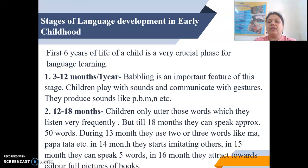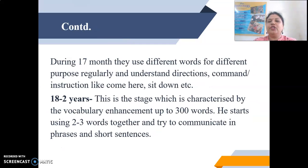In 14 months they start imitating others, and in 15 months they can speak 5 words. In 16 months they are attracted towards colorful pictures in books. During the 17th month they use different words for different purposes regularly, and begin to understand directions, commands, and instructions like 'come here', 'sit down', etc. These actions should also be accompanied by symbolic body language or expressions.